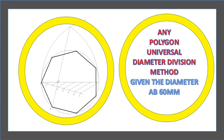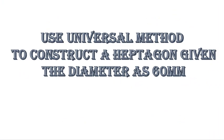So in this case let us do a heptagon. Use universal method to construct a heptagon given the diameter of 60 mm. That is the question that we are going to tackle.